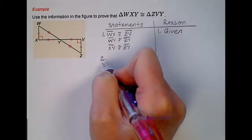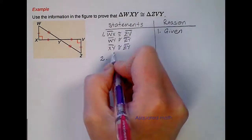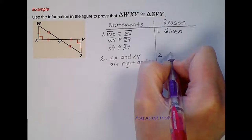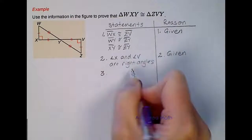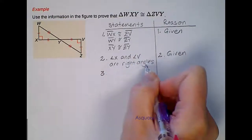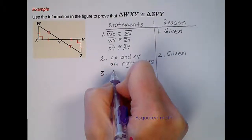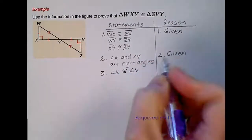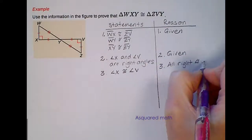The second thing I'm going to say, I know that angle X and angle V are right angles. This is also marked in the picture, so we can say that is given. The third thing I'm going to do now is I'm going to essentially take those words 'right angles,' and since they're both right angles, they have to be congruent to each other. So angle X is congruent to angle V, and that's because all right angles are congruent.